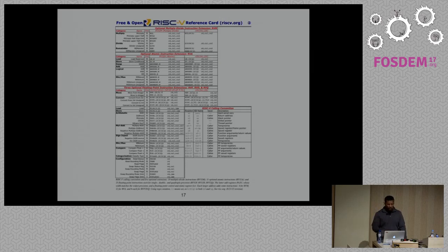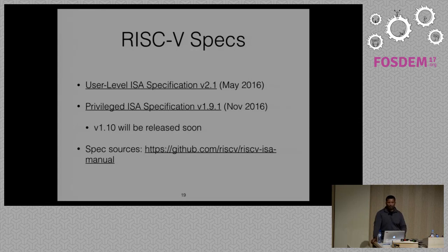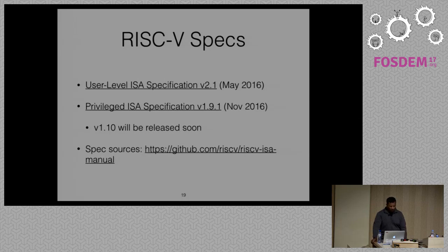You can check out the user-level ISA specification version 2.1 for details on what instructions look like — branches, loads, stores, arithmetic operations. The privileged ISA specification is at version 1.9.1 — this is the interface the OS and firmware uses, and it's currently in development; version 1.10 will be released soon. If you want to look at the LaTeX sources for these specifications, you can find them on GitHub, because it's an open standard.